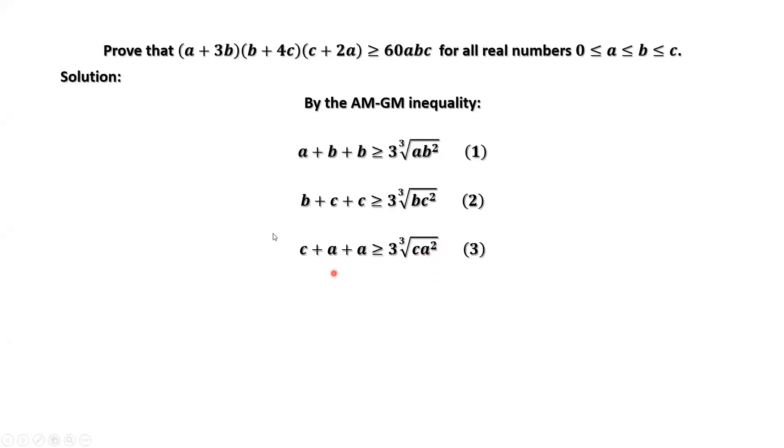The idea is very smart here. Now we do the following operation: multiply inequalities 1 times 2 times 3. The product of the left-hand side is (a + 2b)(b + 2c)(c + 2a) is greater than or equal to 3 times 3 times 3, which is 27 times abc.